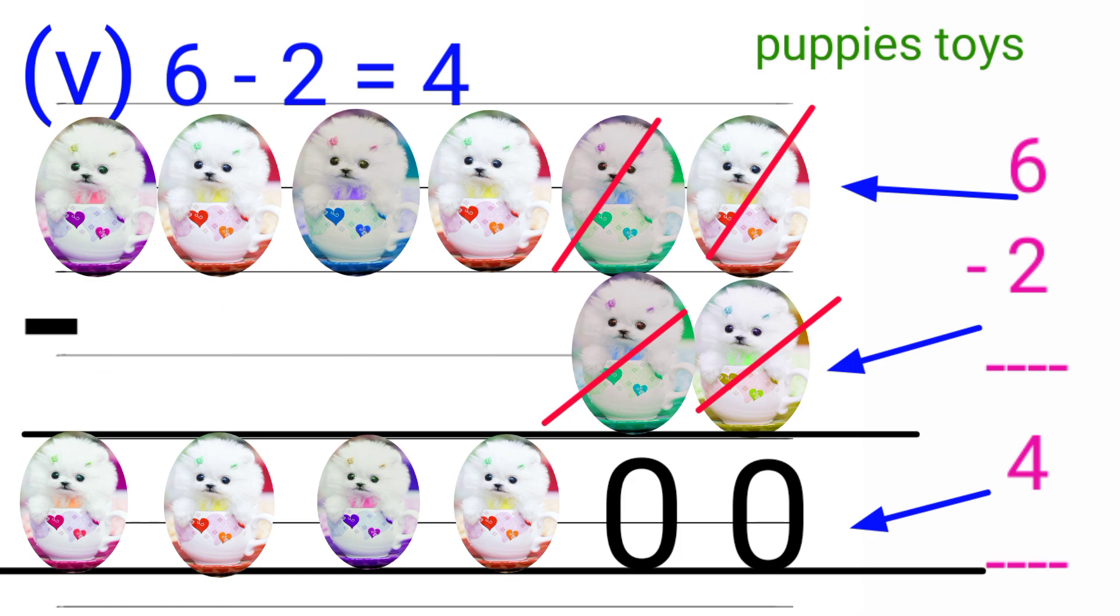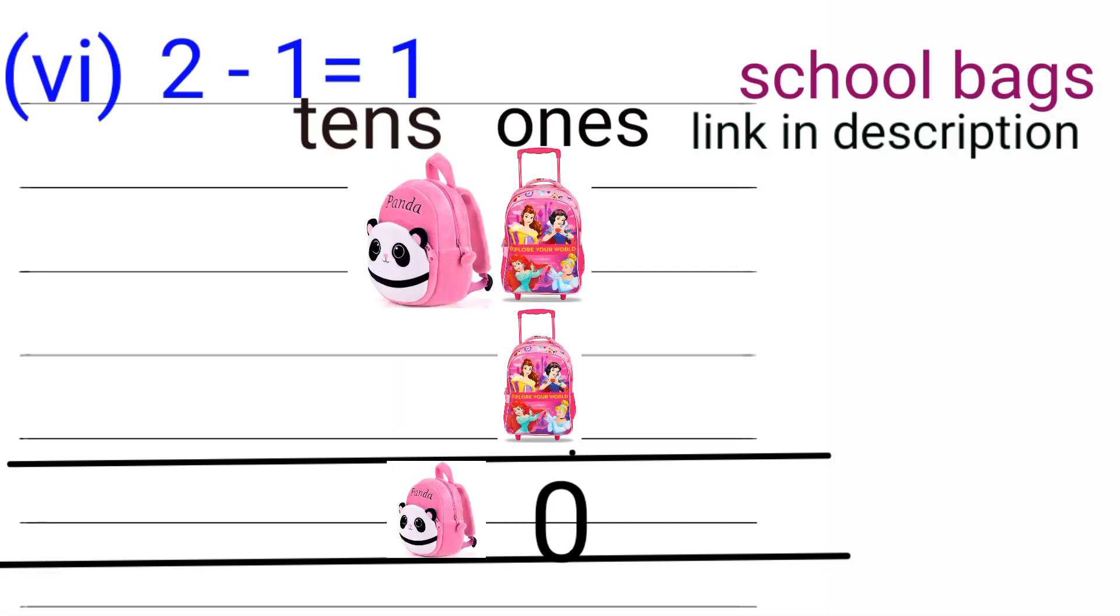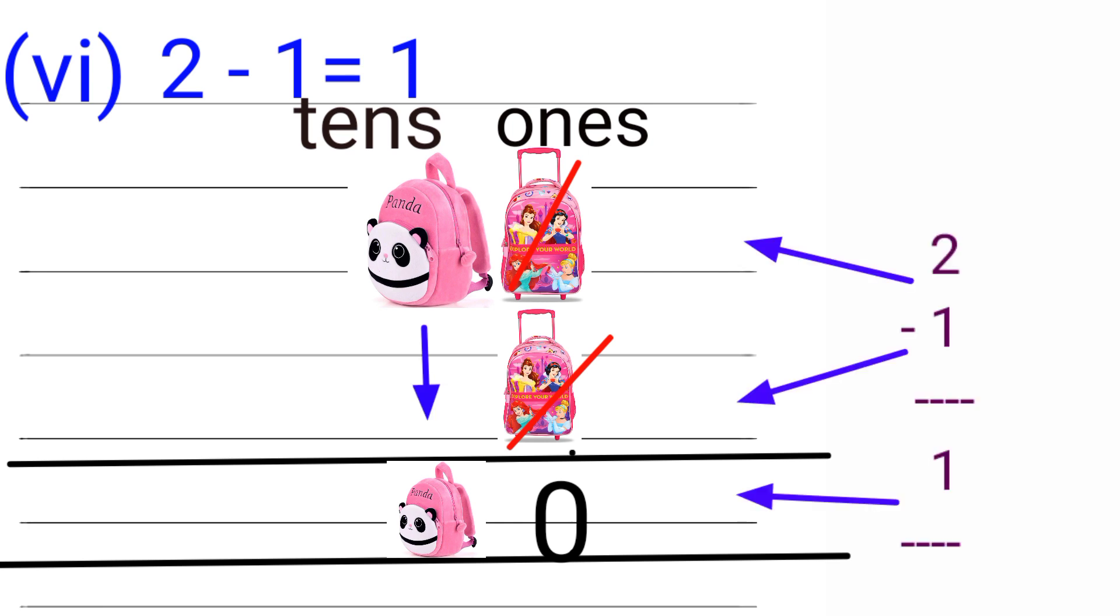Next one: 2 minus 1. Here I have two bags with me, I gave you one bag, so how many left with me? In the ones place, once and once cut off we have zero. Tens place, I have one bag, so I have left with one bag. 2 minus 1 equals 1.